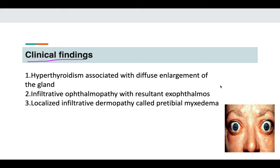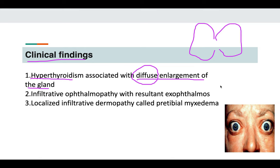Now going to the clinical findings. There are three main clinical findings seen in patients. First is hyperthyroidism, and this is associated with diffuse enlargement of the gland. The enlargement is diffuse — the thyroid is a butterfly-shaped gland and the enlargement is diffuse throughout.